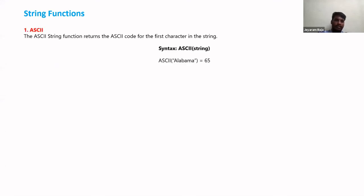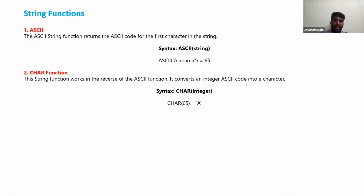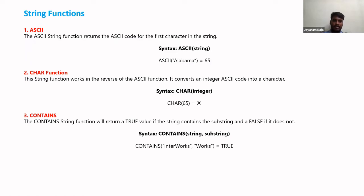Now switching to string functions. The ASCII function returns the ASCII integer value of a string — for example, ASCII('A') returns 65. The CHAR function is the reverse: given an integer ASCII code, it returns the corresponding character. The CONTAINS function is used to check whether a substring exists within a main string — for example, CONTAINS('Interworks', 'works') returns true, and false if not found.